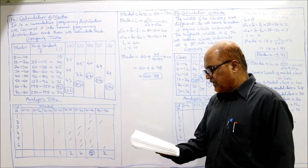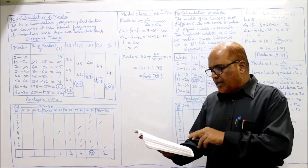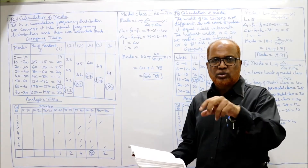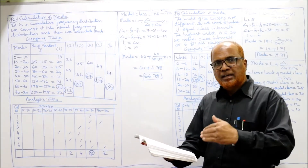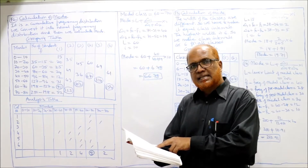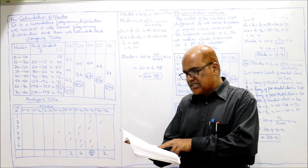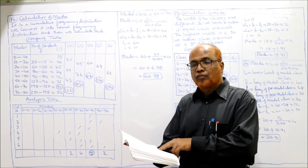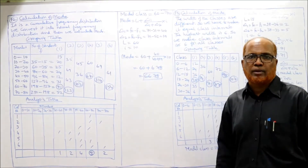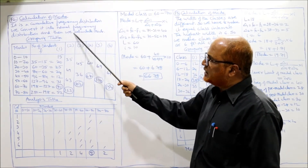Number of students: 15, 35... Below 10 means 0 to 10, so frequency for 0 to 10 is 15. We convert into class intervals: 10 to 20, 20 to 30, 30 to 40, 40 to 50. Frequencies: 15, then 35−15=20, 60−35=25, 84−60=24, 96−84=12, 127−96=31, 198−127=71, 250−198=52. First we convert the cumulative frequency distribution into normal frequency distribution, and then we calculate the mode.